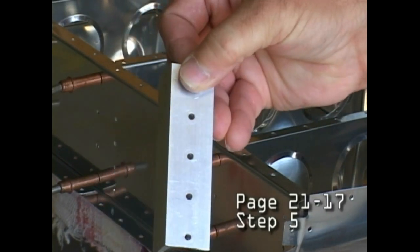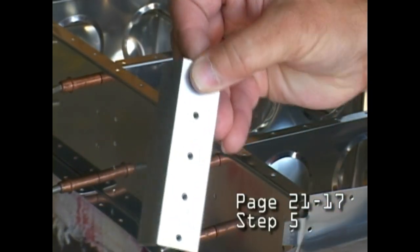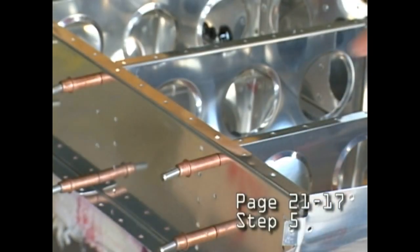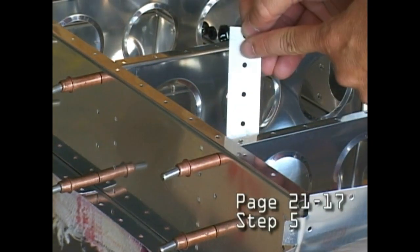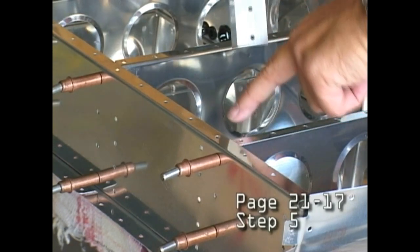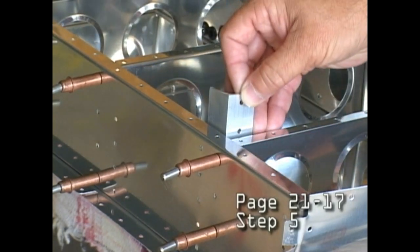Starting with the narrow one, the one that we trimmed on the face, we'll install that against the rib. The pre-drilled holes will line up with the pre-drilled holes in the rib, and we'll slide this down.